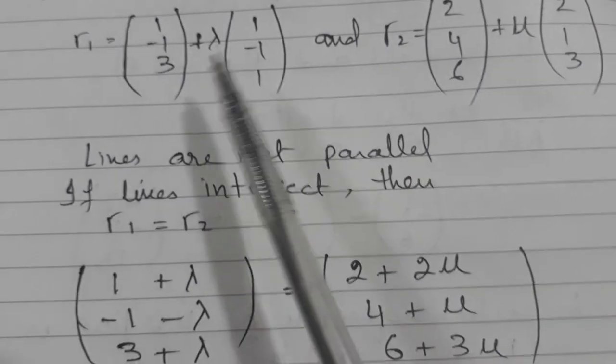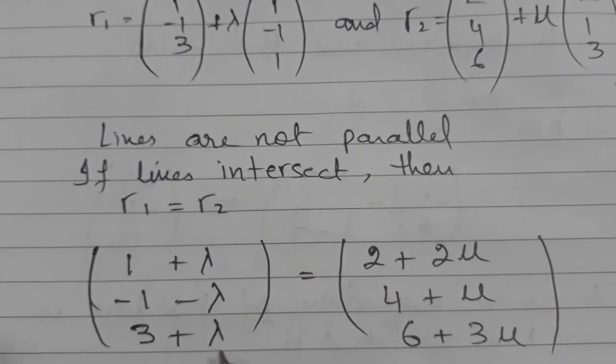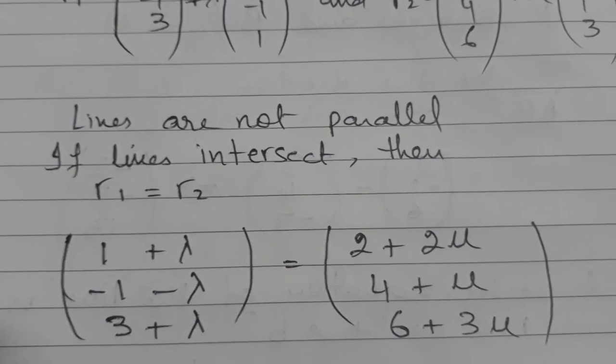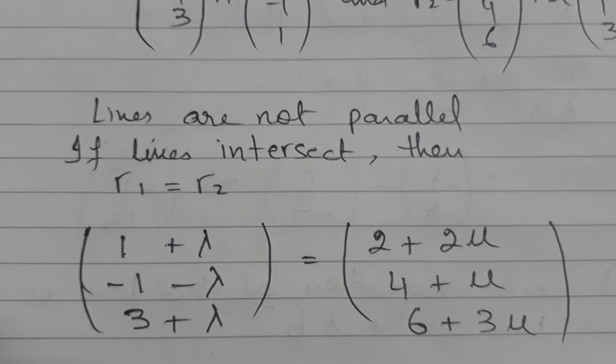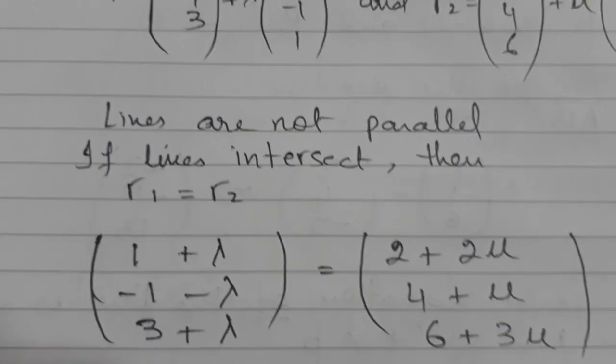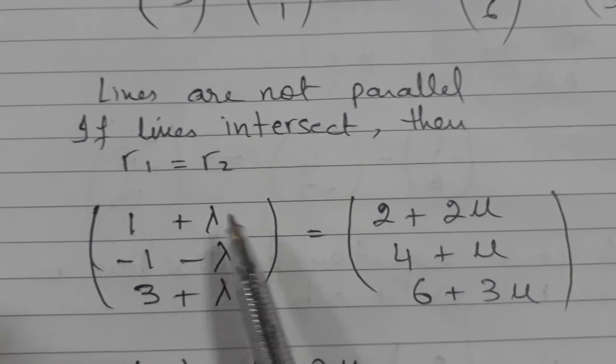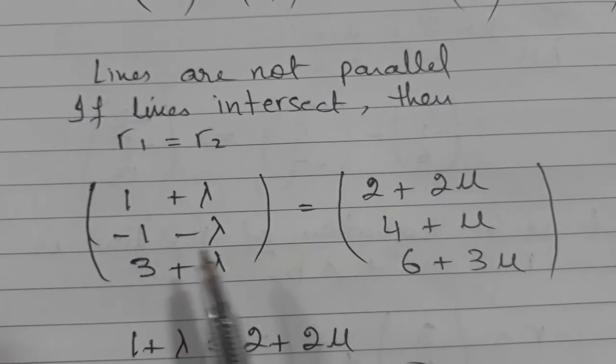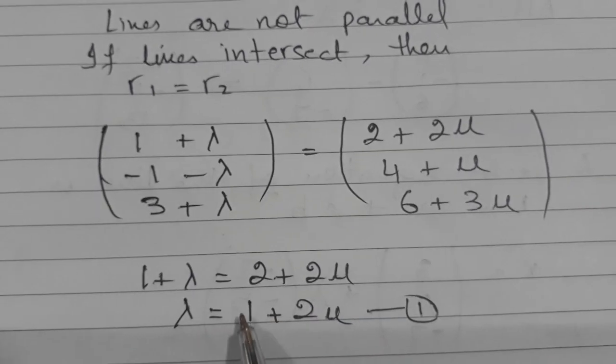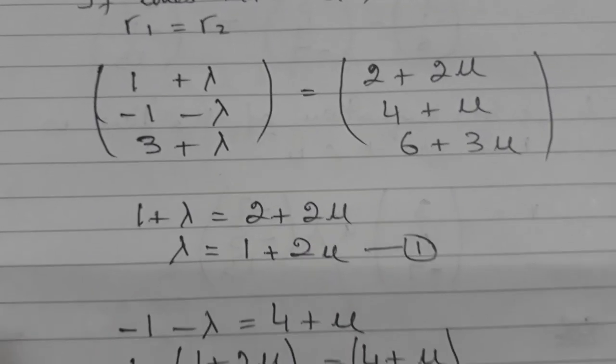So we are changing these vectors into x, y, z form. Now to find out the point of intersection or to show that it is intersecting, we will pick up any two coordinates, suppose x with x, y with y and we will equate it and solve it simultaneously.